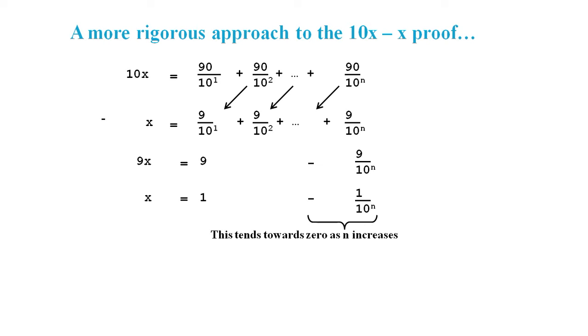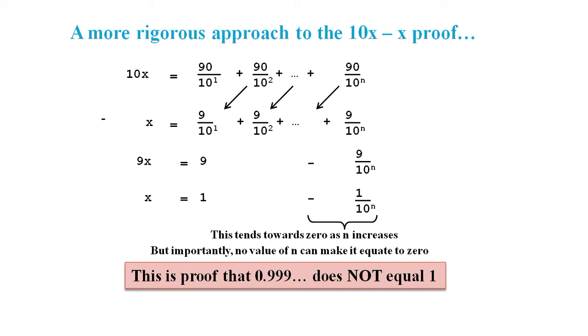Now we could argue that this extra term does tend towards 0 as n increases, but no value of n can make it equal to 0. Effectively, we have shown that 0.9 recurring does not equal 1.